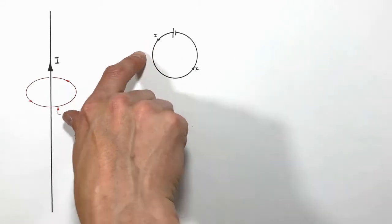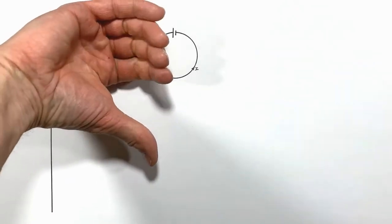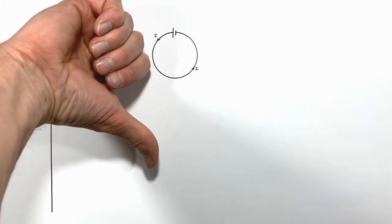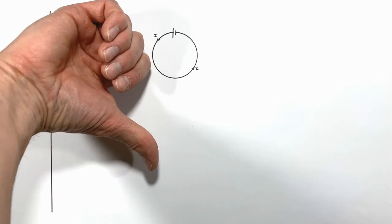If I was to do the same thing over here and grab the wire on this left side, we would see my thumb would be pointed down and the magnetic field would effectively be reversed. My fingers are curling in the opposite direction.